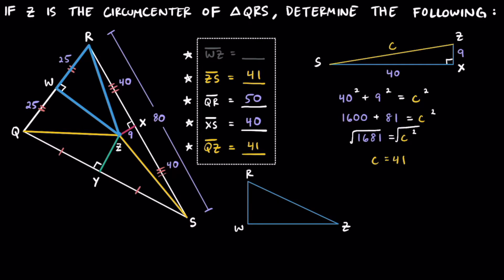Remember, segment WZ was the perpendicular bisector, so we know that this is going to be the right angle. We also figured earlier that segment WR was equal to 25. And of course, RZ must be 41, because it's one of those lengths from the vertex to the circumcenter, so it matches the other ones as well.